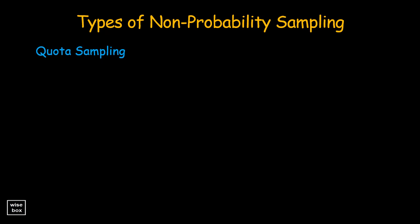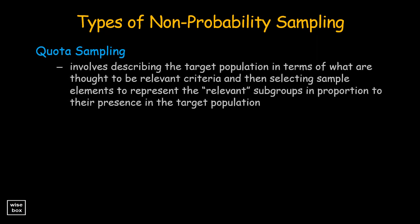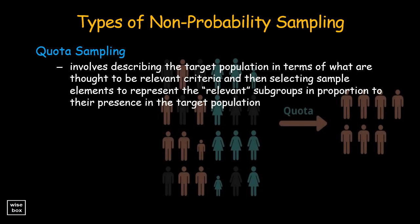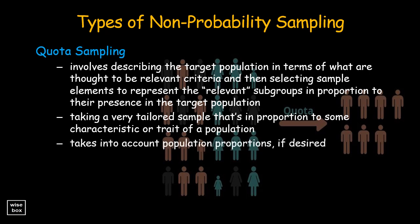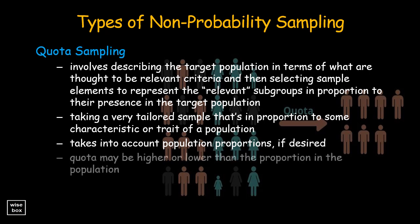Quota sampling is a non-probability sampling procedure that involves describing the target population in terms of relevant criteria, and then selecting sample elements to represent the relevant subgroups in proportion to their presence in the target population. Quota sampling means taking a very tailored sample that is in proportion to some characteristic or trait of a population. The researcher has the option to set a quota higher or lower than the proportion seen in the population.